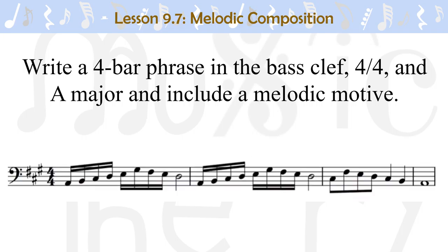Sample answer shown. In my answer, the first measure is a motive, which is repeated again exactly in the second measure. The climax is the G-sharp in the second beat of the second measure. The ascent goes from the beginning to the beginning of the second measure, and the descent goes from the end of the second measure to the end.